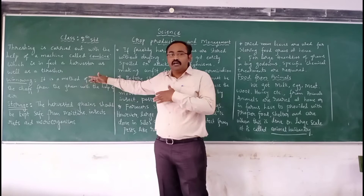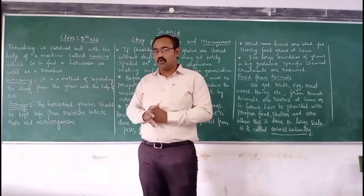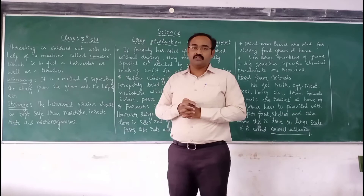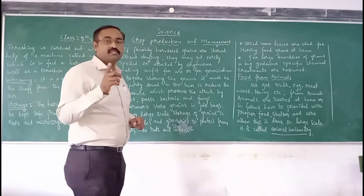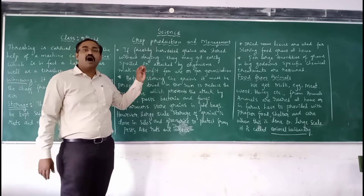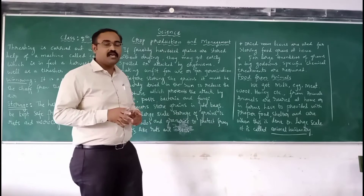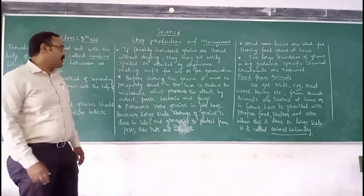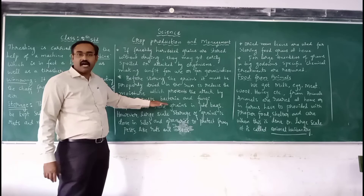After separating the grain, one of the most important tasks comes — that is storage. These harvested grains have to be stored properly. If freshly harvested grains are stored without drying, the grains contain lots of moisture in them, which may cause them to spoil easily or be attacked by organisms, making them unfit for human use or even for germination. Before storing these grains, they should be dried properly in the presence of sunlight, which helps to prevent attack from insects, pests, bacteria and fungi.